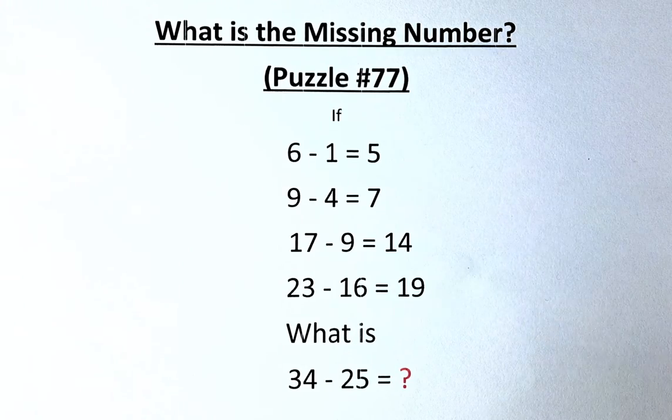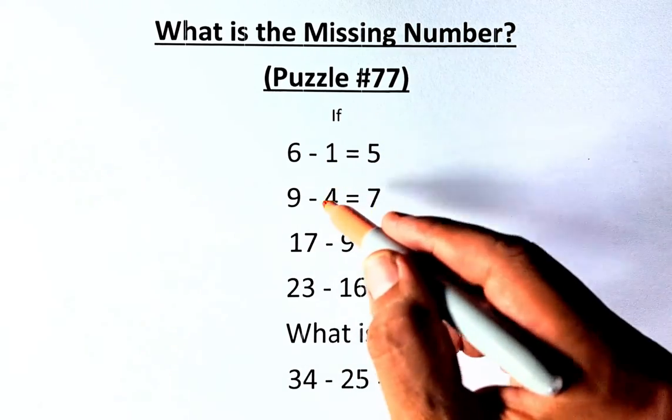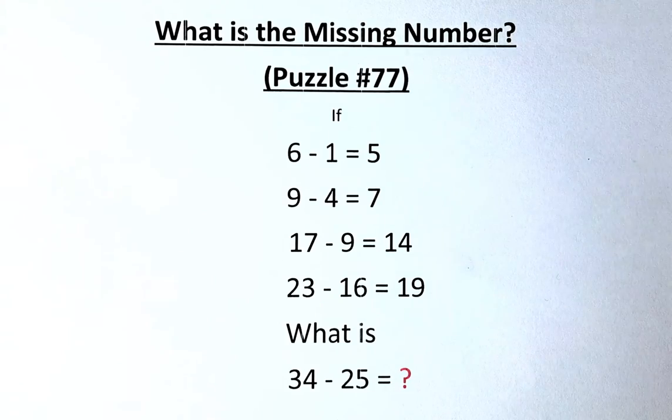So what we're going to do, if you look at the second number, they are all square numbers: 1, 4, 9, 16, 25, they are all square numbers.